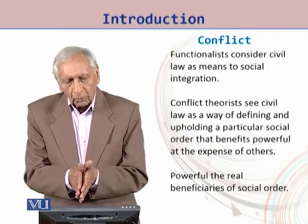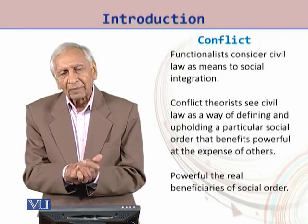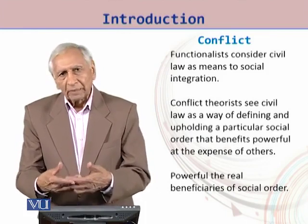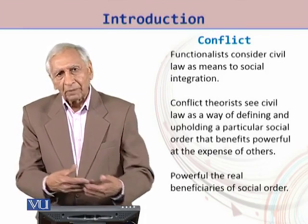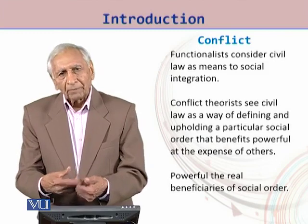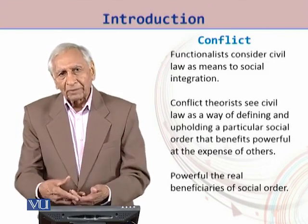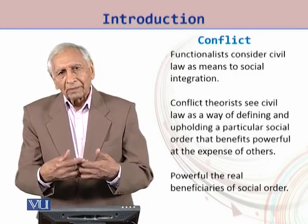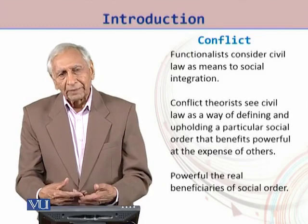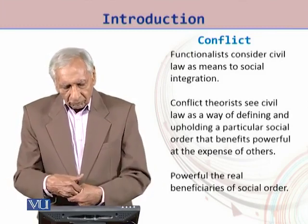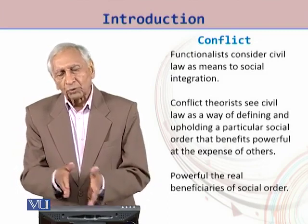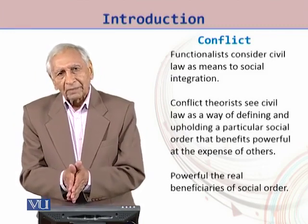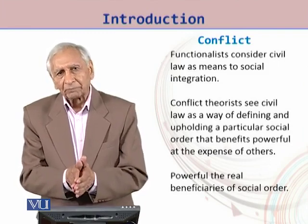If there are civil laws, who makes those civil laws? Civil laws are made by the people in power. Whatever is the basis of this power — economic power, political power, or some other power — the powerful people make the laws, and they make use of these laws for order in society. But that order is temporary; ultimately some kind of conflict emerges again. The powerful are the real beneficiaries of the social order, and any disturbance or disorder in society has to be suppressed, and that suppression is carried out by the powerful people.